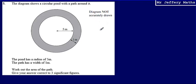This is question five from a series of videos taking a look at the NXEL practice papers. Here we're told that the diagram shows a circular pond with a path around it. We've got this diagram here.